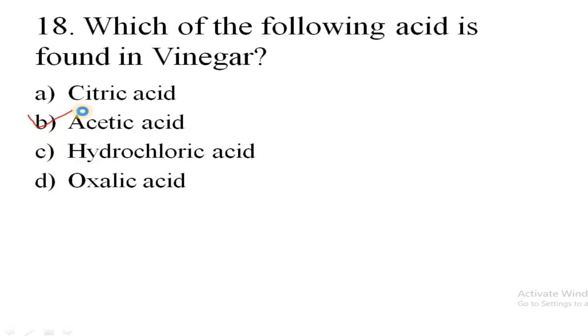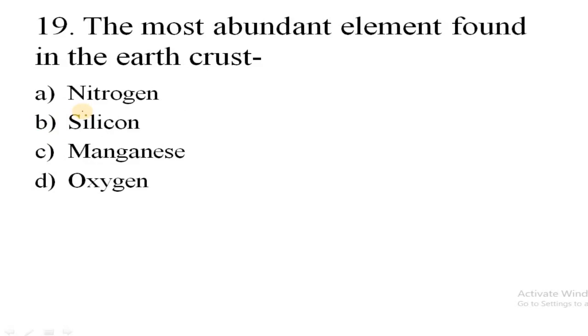Let's go to the next question. The most abundant element found in earth crust: option A nitrogen, B silicon, C manganese, D oxygen. Correct answer is oxygen, that is D. Nitrogen is abundant in atmosphere, not in earth crust. So it's also a very important question, please remember this.